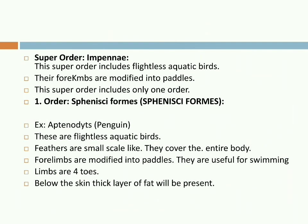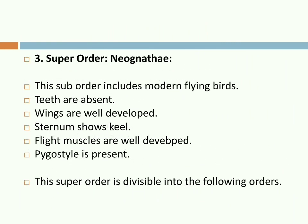Impennae, also known as Sphenisciformes, is a super-order that includes flightless aquatic birds. Their forelimbs are modified into paddles. This super-order includes only one order: Sphenisciformes. Example: Aptenodytes — the Penguin. Penguins are flightless aquatic birds. Their feathers are small and scale-like, covering the entire body. The forelimbs are modified into paddles useful for swimming. Below the skin, a thick layer of fat is present.